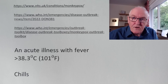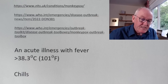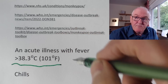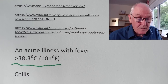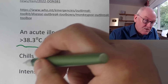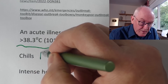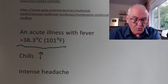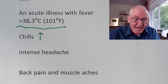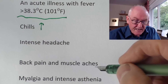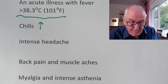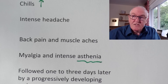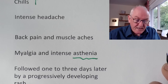Then there's an acute illness with fever above 38.3 degrees centigrade (101 degrees Fahrenheit), at which point the person feels quite ill. They have chills — as the body temperature rises the person feels cold and seeks warmth. Usually there's a bad headache, muscle pain and aches, back pain, myalgia, and asthenia, which means general weakness and tiredness.